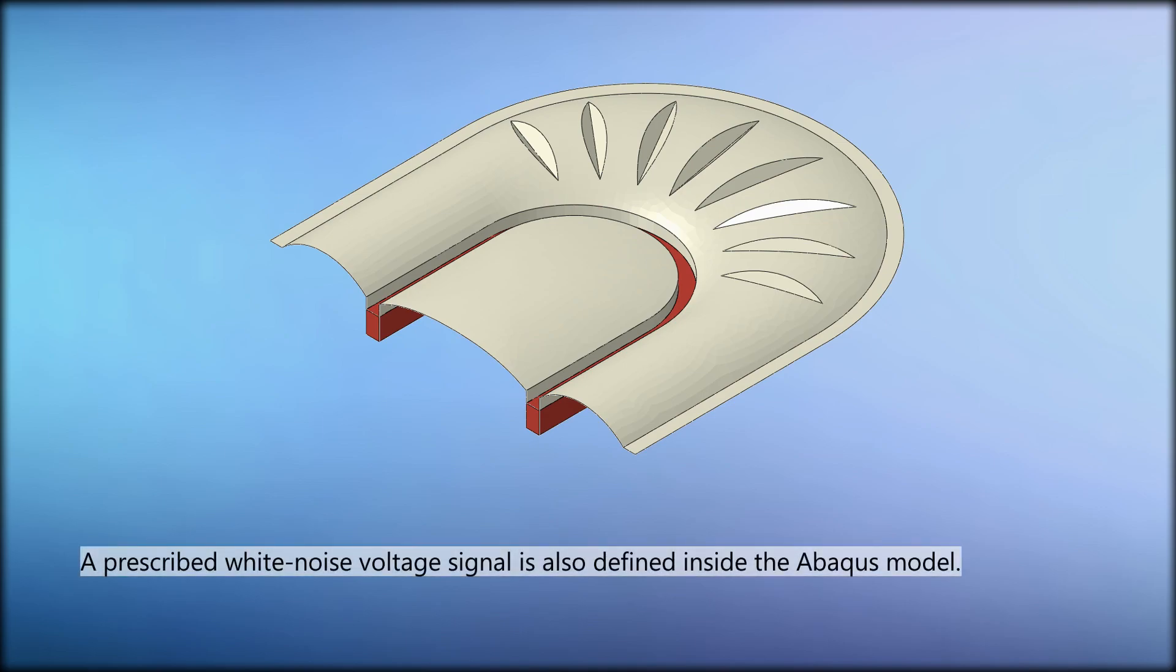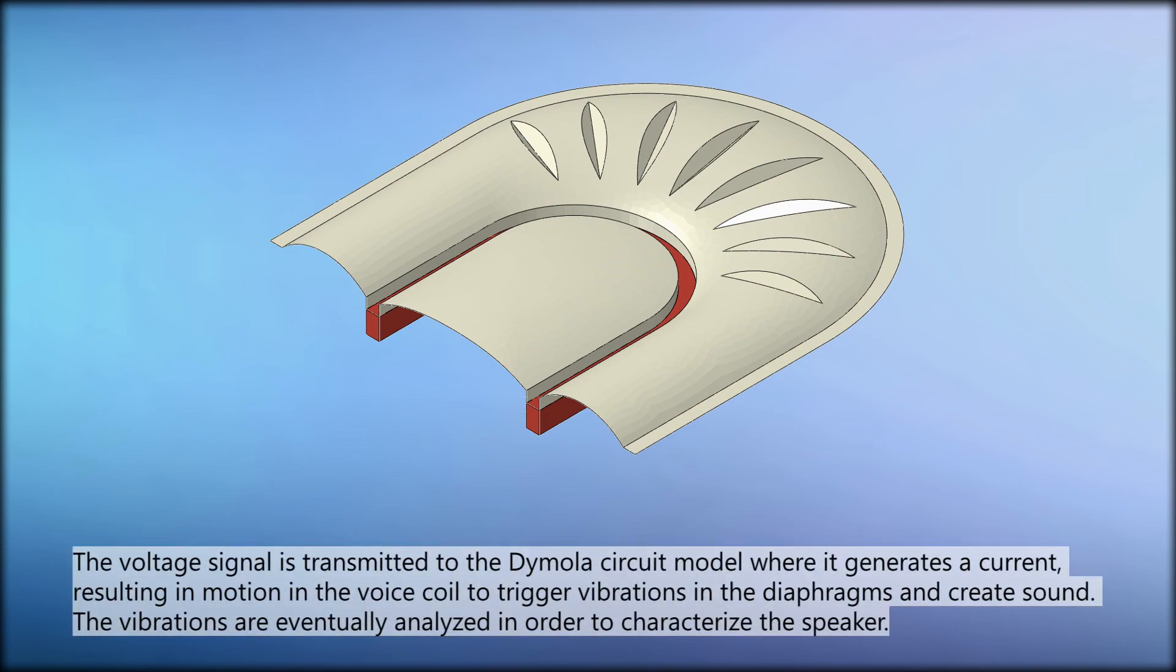A prescribed white noise voltage signal is also defined inside the Abacus model. The voltage signal is transmitted to the Dymola circuit model where it generates a current, resulting in motion in the voice coil to trigger vibrations in the diaphragms and create sound. The vibrations are eventually analyzed in order to characterize the speaker.